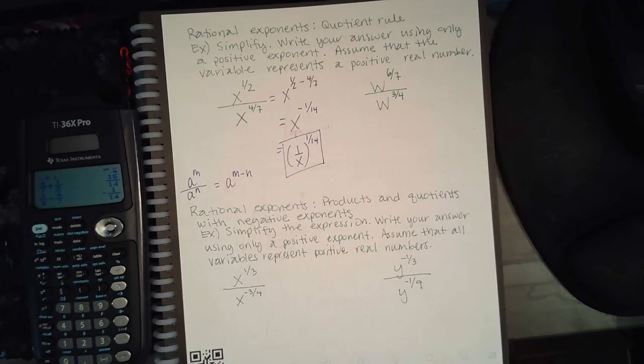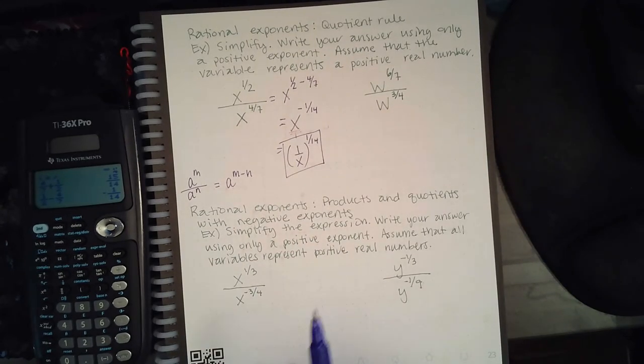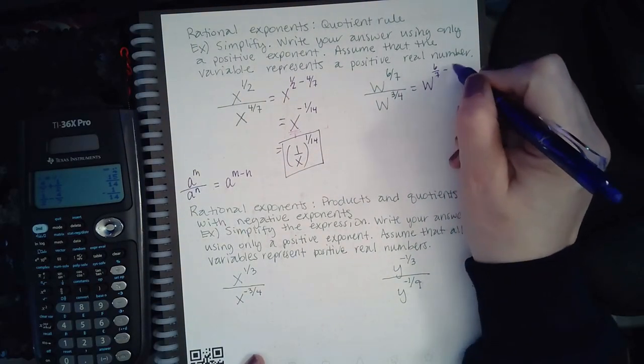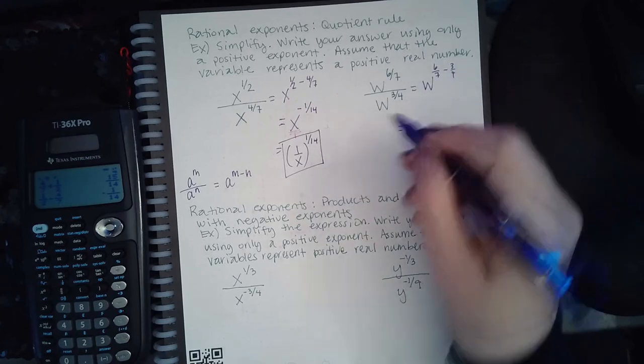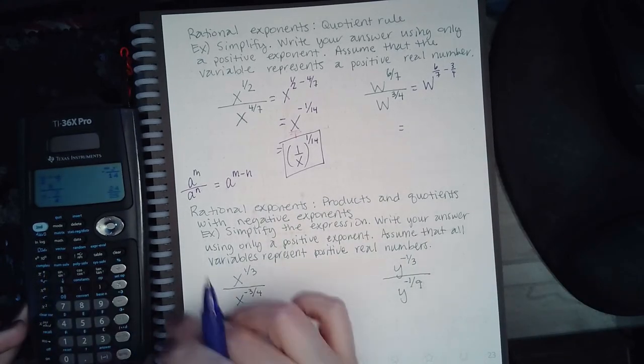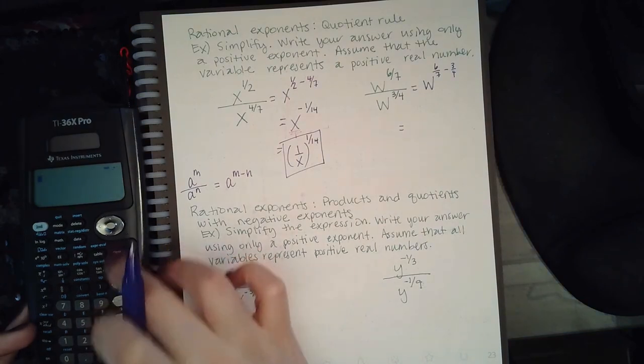If there is no fraction, imagine that it's over 1. So when I flip it, it becomes 1 over x, and then to the positive 1/14. Let's go on to the next expression.